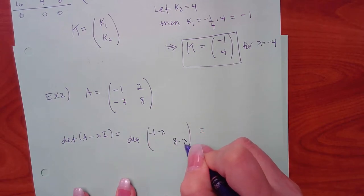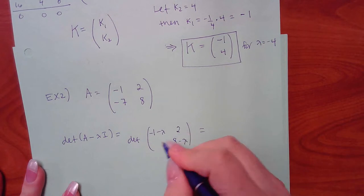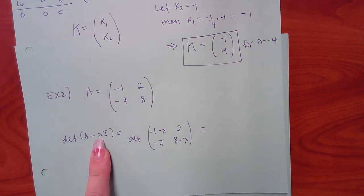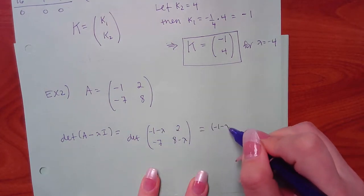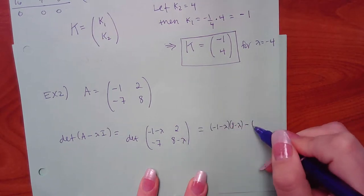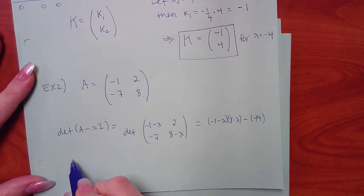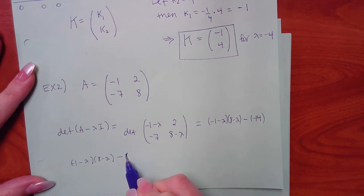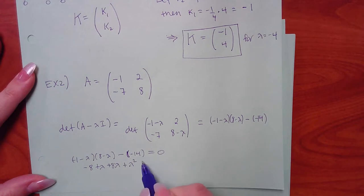Taking the determinant — cross-multiplying — and setting equal to zero: we get (negative 1 minus lambda)(8 minus lambda) minus the off-diagonal product. Expanding: negative 8 plus lambda plus 8 lambda minus lambda squared plus 14, giving lambda squared plus 9 lambda minus... rearranging to get lambda squared minus 7 lambda plus 6.